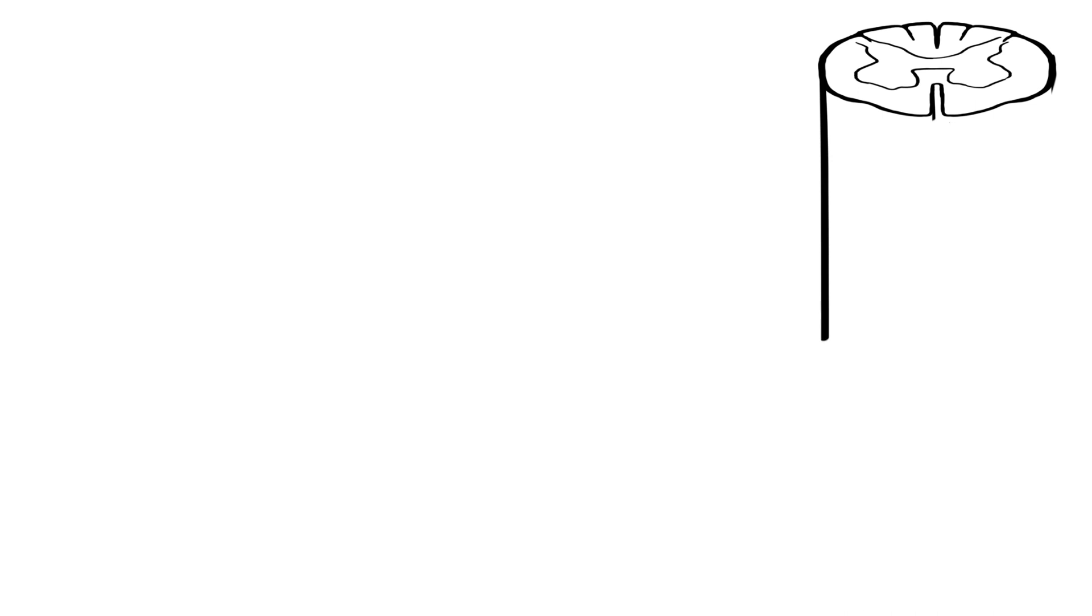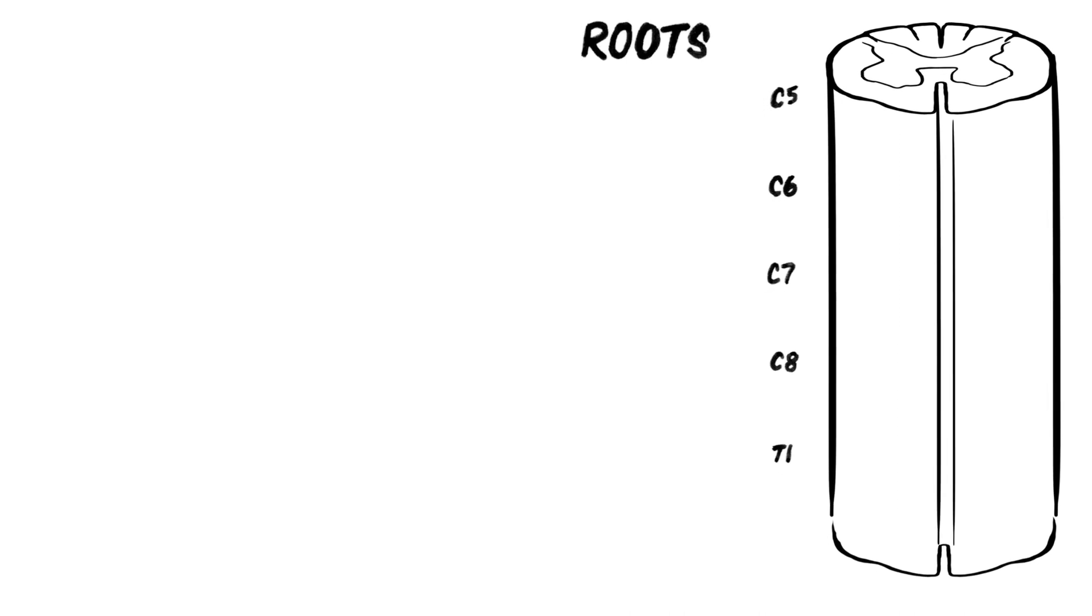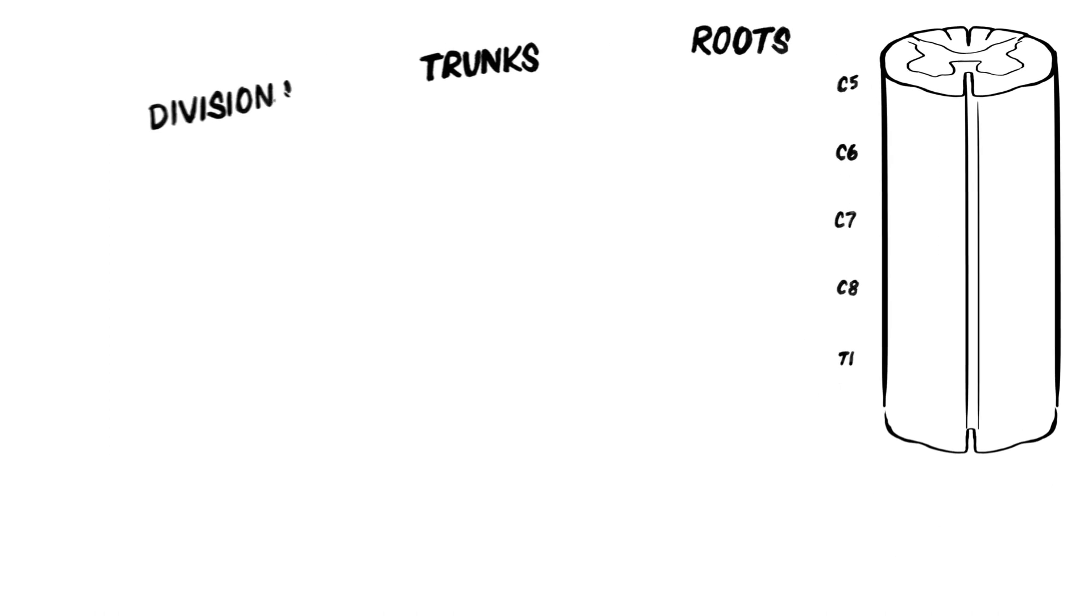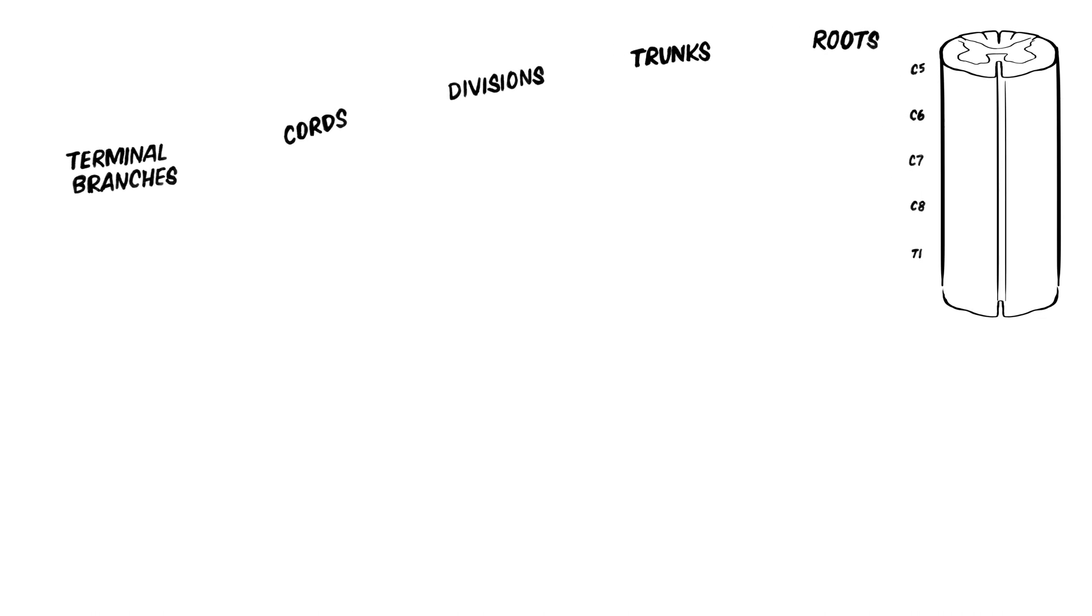Specifically, the brachial plexus contains motor and sensory fibers from spinal segments C5 to T1. Fibers from these spinal segments mix together and then segregate as they form first roots, then trunks, then divisions, then cords, and finally, terminal branches.